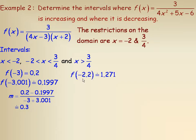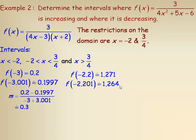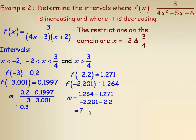Taking a point closer to −2 but still below it — x = −2.2 — the function value is about 1.721. Then x = −2.201 gives y ≈ 1.264. The slope between these two points comes out to about 7. So as we go from left to right, the slope is getting steeper, meaning the graph is increasing as you move from left to right below −2.